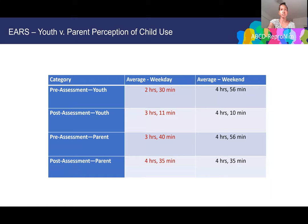Looking at pilot data: in the pre-assessment, youth estimated about two hours and 30 minutes of weekday mobile phone use and four hours and 56 minutes on weekends. In the post-assessment, their perception of weekday use increased to three hours and 11 minutes, while weekend perception decreased to four hours and 10 minutes. Parents estimated their child's weekday use at about three hours and 40 minutes and weekend at four hours and 56 minutes pre-assessment, and the parent perception of weekday use increased to four hours and 35 minutes post-assessment.